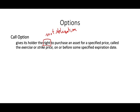The call option gives the right to purchase an asset for a specified price — called the exercise or strike price — on or before a specified expiration date. So I have the right to buy Apple or Microsoft at a certain price within a specific time period. Who buys a call option? The person who thinks the price is going to go up, because they want to buy the asset in the future and want to lock in a price.